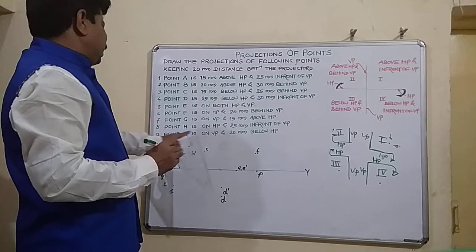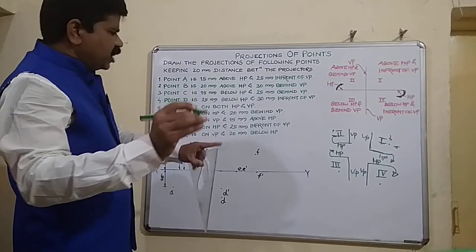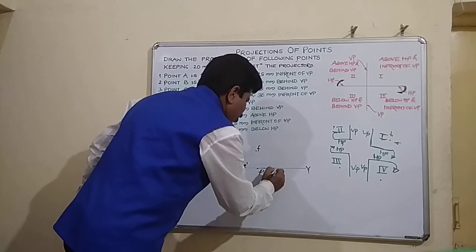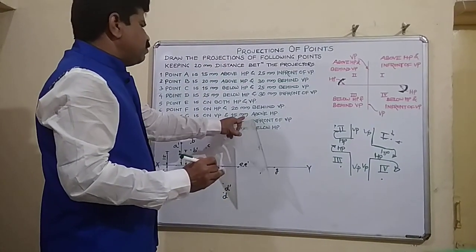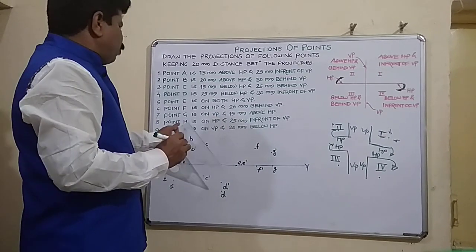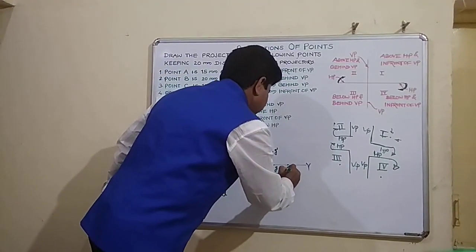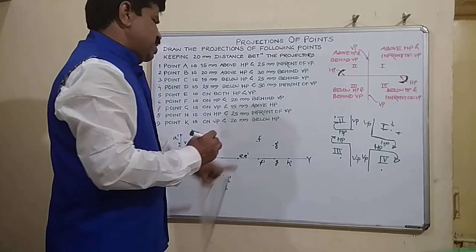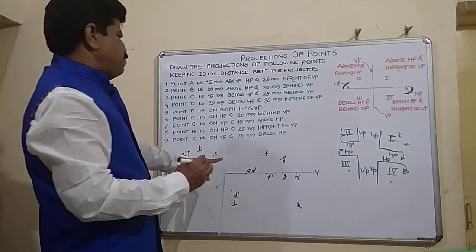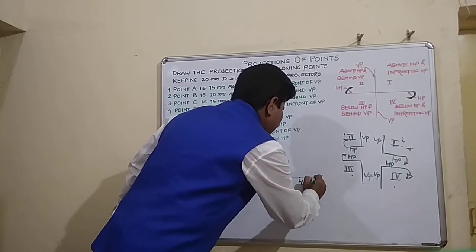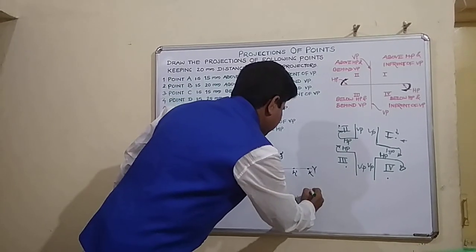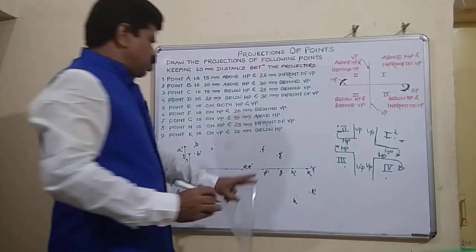Point G is on VP and 15 mm above HP. When a point is on VP, the top view point lies on XY itself — so G is a plain alphabet on XY. The front view G dash will be 15 mm above XY. Point H is on HP, so H dash is on XY, and 25 mm in front of VP places H below XY. Point K is on VP and 20 mm below HP — K is on XY as a plain alphabet, and K dash will be below XY.